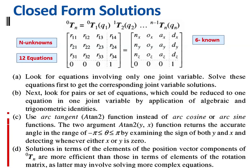Step d: solutions in terms of elements of the position vector — the last column of the transformation matrix containing d1, d2, d3 — are more efficient than those in terms of elements of the rotation matrix. Among the twelve equations, first try the last column elements, as they give simpler expressions that are easier to solve.